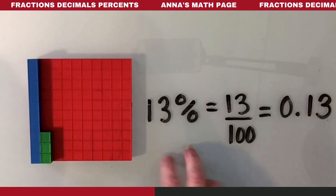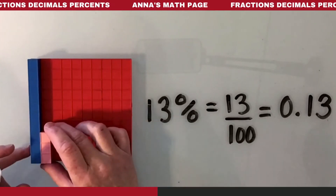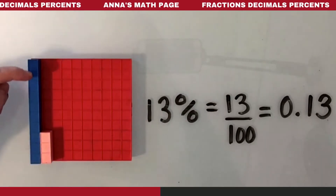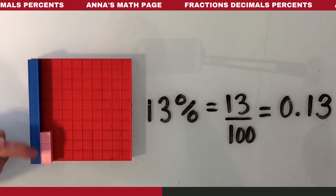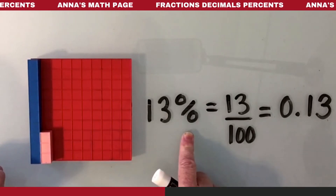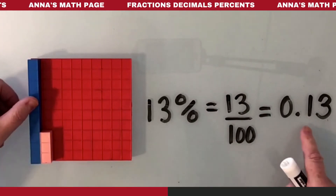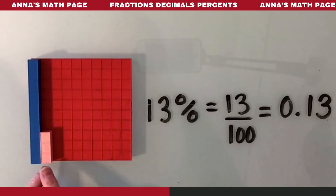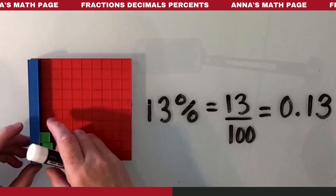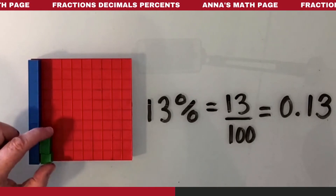You don't even have to change the colors. You could simply just have it like this — and you'd have 13%: 13 pieces out of 100, 13 squares out of 100 squares, which is the same as 13 out of 100, which is the same as 1 tenth and 3 hundredths. And if you wanted, you could use greens instead of pinks — 1 of those and 3 of those.